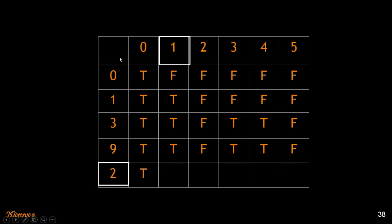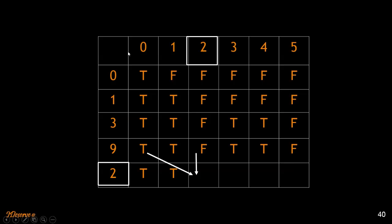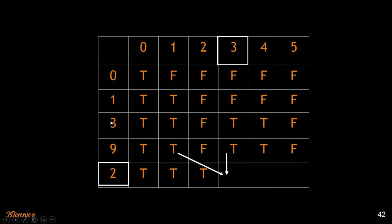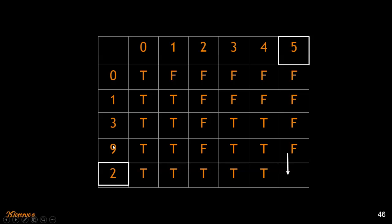Now for element 2, we consider the full set {0,1,3,9,2}. For target sum 1: carry truth value from above — true. For target sum 2: above is false, but 2 minus 2 is 0, and 0 is achievable — true. For target sum 3: true from both paths. For target sum 4: true. For target sum 5: 5 minus 2 is 3, and 3 is achievable — true. So our final output is true, meaning there is a subset that adds up to 5.